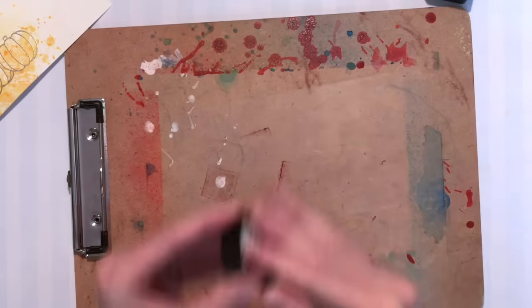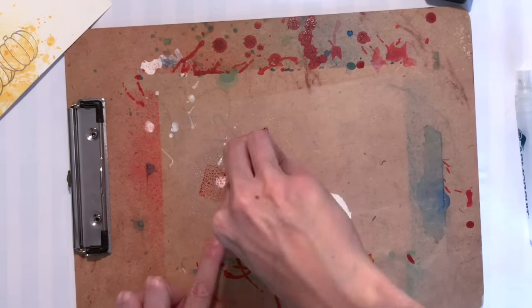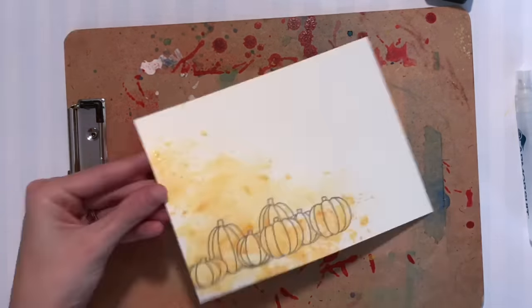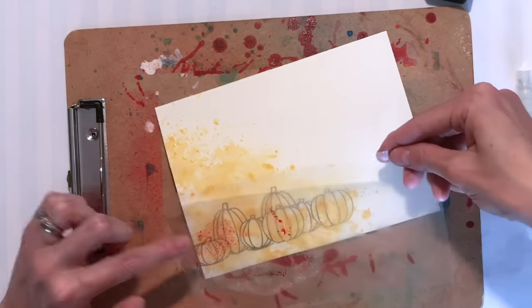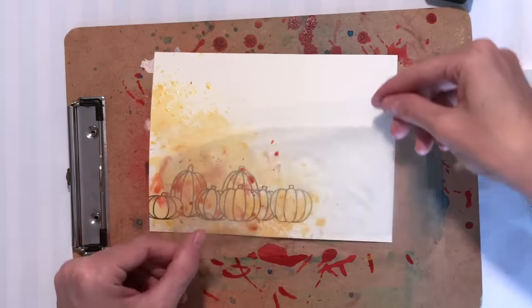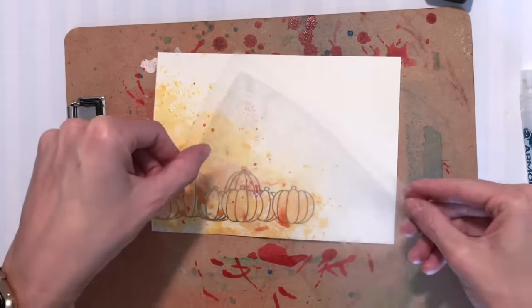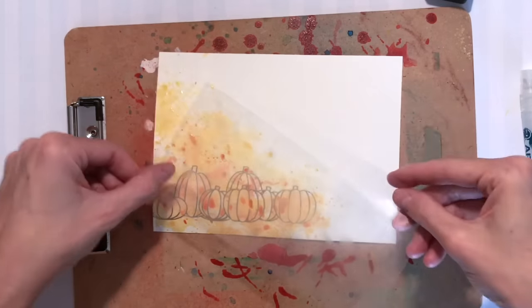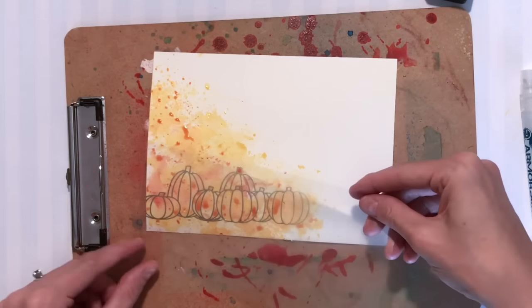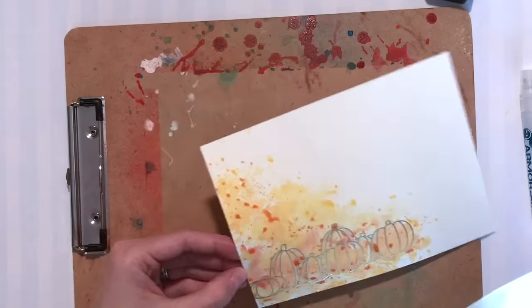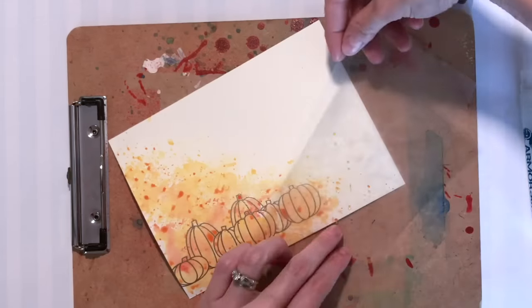Okay now I'm ready for my third color which is fired brick. Smushed it on my piece of acetate, spritzed it with water and now I'm going to smush it onto my panel. Moving it around, moving the acetate around so I can kind of distribute that red, that fired brick around, getting little dots.